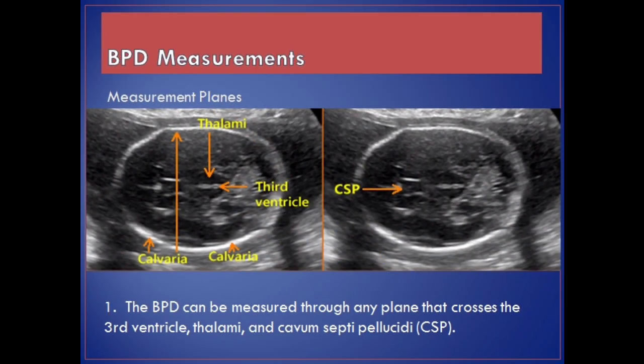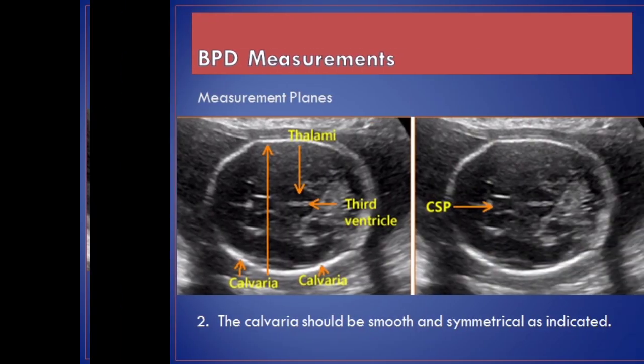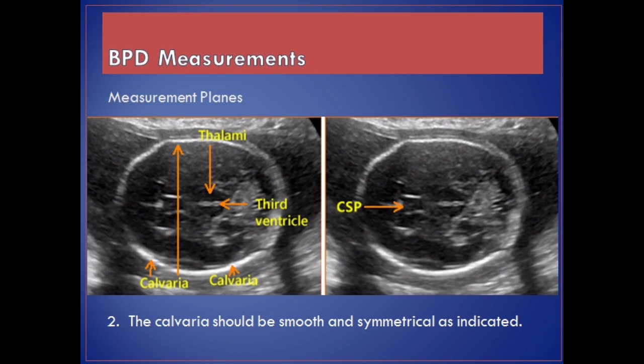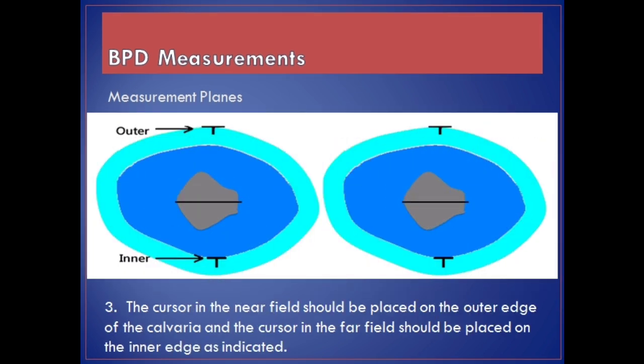BPD measurements — measurement planes. The BPD can be measured through any plane that crosses the third ventricle, thalami, and cavum septi pellucidi, CSP. The calvaria should be smooth and symmetrical as indicated. The cursor in the near field should be placed on the outer edge of the calvaria and the cursor in the far field should be placed on the inner edge as indicated.